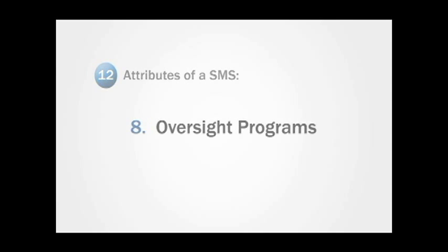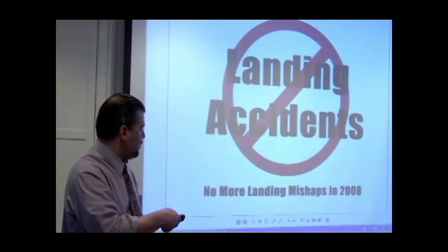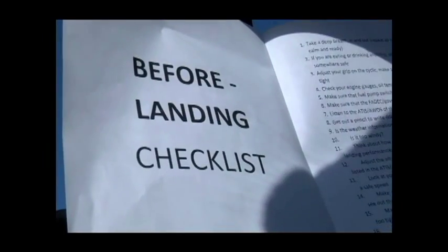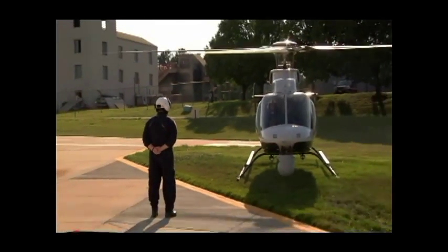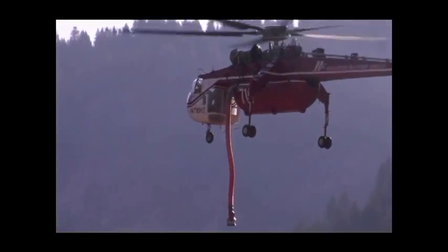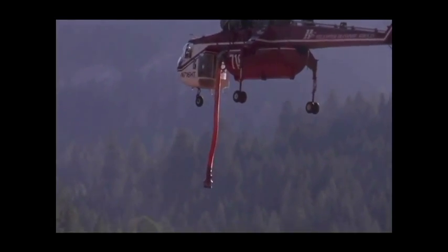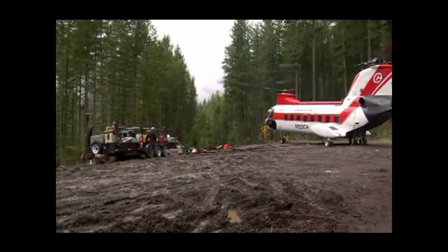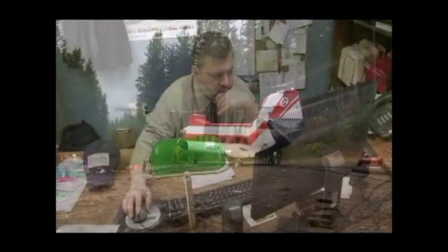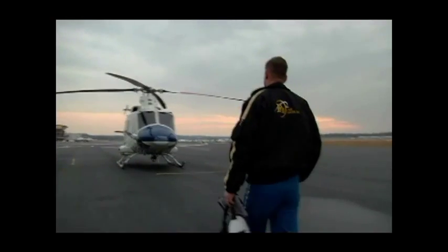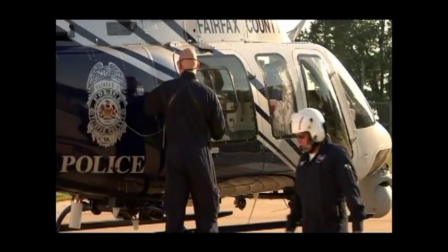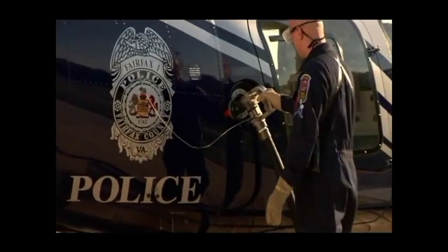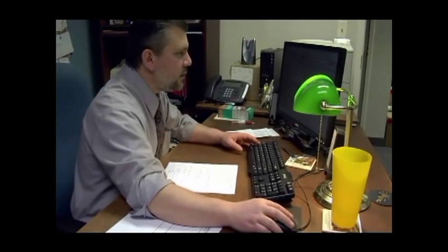Una delle cose da fare in un SMS è essere sicuri che le azioni intraprese non stiano causando conseguenze inaspettate. Se stai cercando di prevenire un inconveniente ma il tuo tentativo di prevenzione può portare a un incidente, allora stai solo aggravando la situazione. Devi mettere in atto programmi che ti portino a rispettare tutte le tue procedure, per essere sicuro che esse abbiano l'effetto desiderato — effetti di safety piuttosto che conseguenze inaspettate. Bisogna osservare un processo che non sta dando il risultato desiderato e chiedersi il cosa e il perché. Un SMS è un sistema dinamico che devi sempre cercare di rendere migliore.